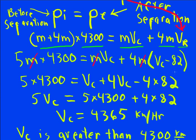The M's cancel. If that bothered you to have M in there, just make something up for it. One kilogram would be a good choice. And so now we get 5 times 4,300 equals Vc plus 4 times Vc, and then 4 times negative 82.